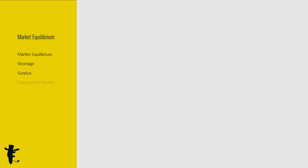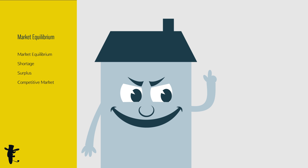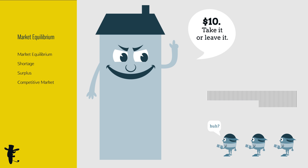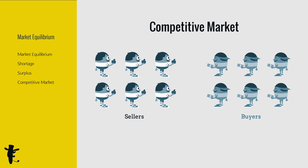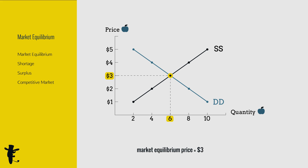What happens if we have a super powerful firm that can influence price? Well, we assume we have a competitive market. There are many similar sellers and buyers. With so many of them, none can influence price — they are price takers. The market sets the price.